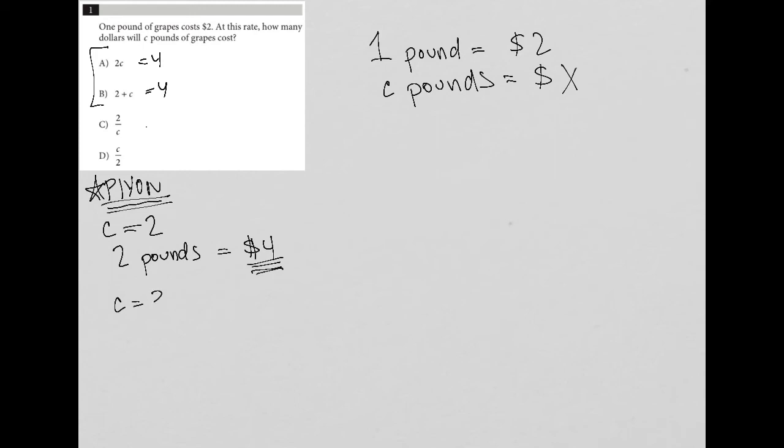So let's say I try C is three. So if C was three, that means I have three pounds. And that means I would expect that the cost for those three pounds would be six dollars, right? Two dollars per pound. I have three pounds. So six dollars.